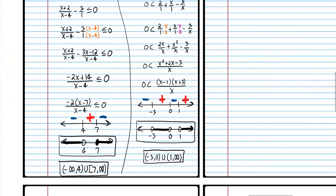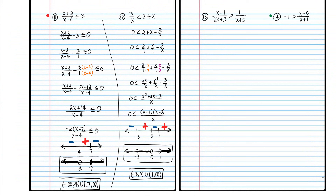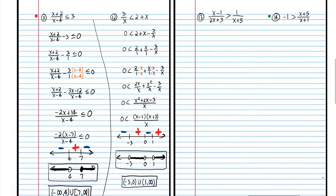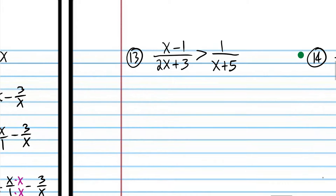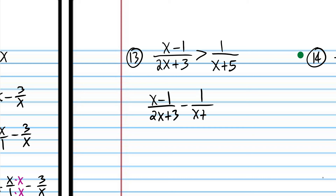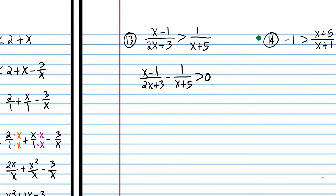That was another example of these types of problems where we have to find a common denominator. Let's try one more of these before you try one on your own. We follow the same steps: start by putting everything on one side of the inequality. Step two: combine everything, but notice we don't have a common denominator.